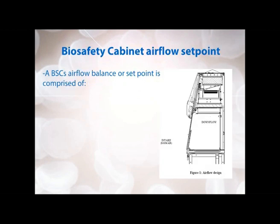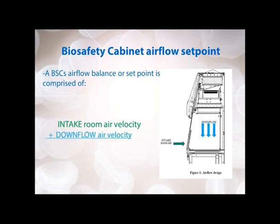In order to understand what intake air is, we're going to discuss the biosafety cabinet airflow set point. A BSC airflow balance or set point is comprised of two parts. First, you have the intake or room air coming in through the open front sash of the biosafety cabinet — when the sash is at its designated height such as 8, 10, or 12 inches. This is balanced with the amount of downflow air coming down through the HEPA filter and diffuser into the work area. These two speeds make up the airflow set point.